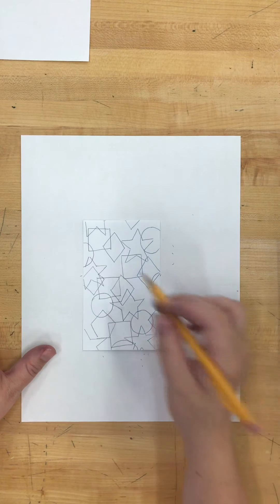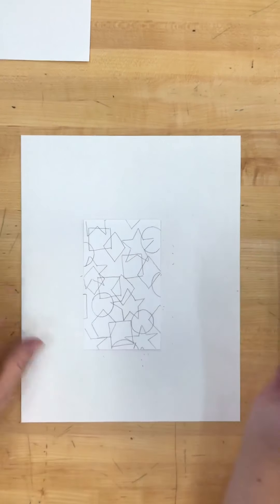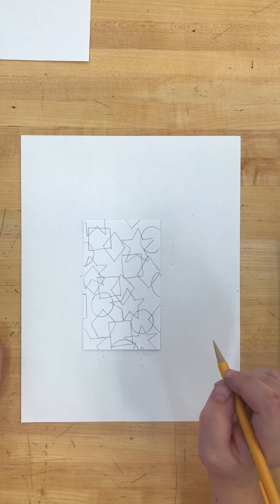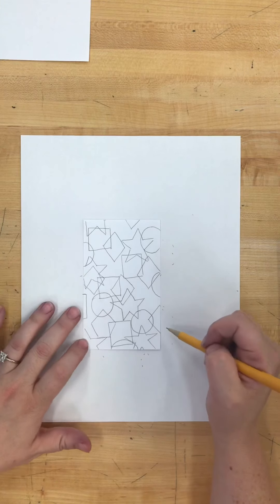That looks pretty cool. I kind of made a weird pattern here. Fill up that negative space. And I think that's good. So these are geometric shapes.